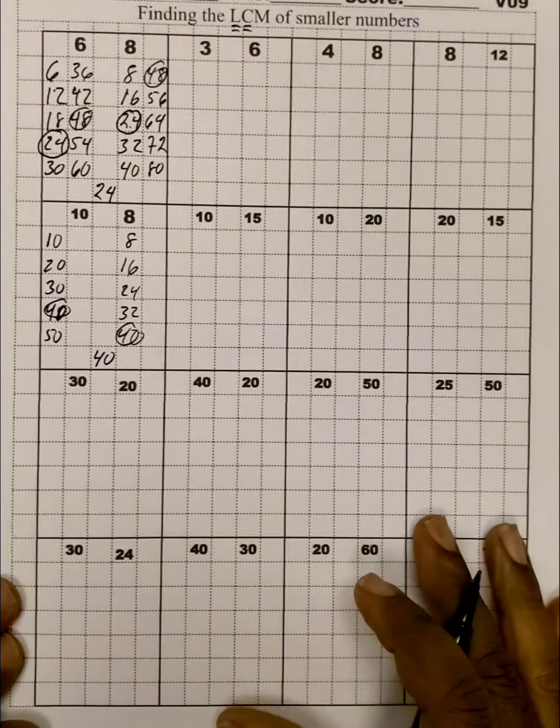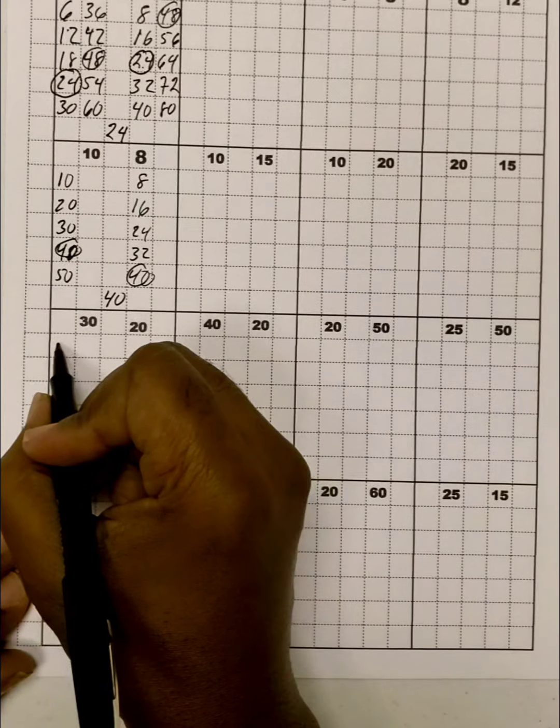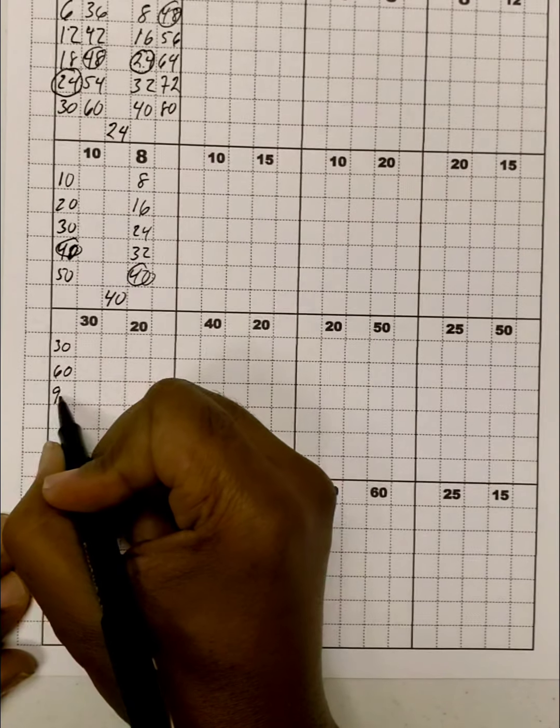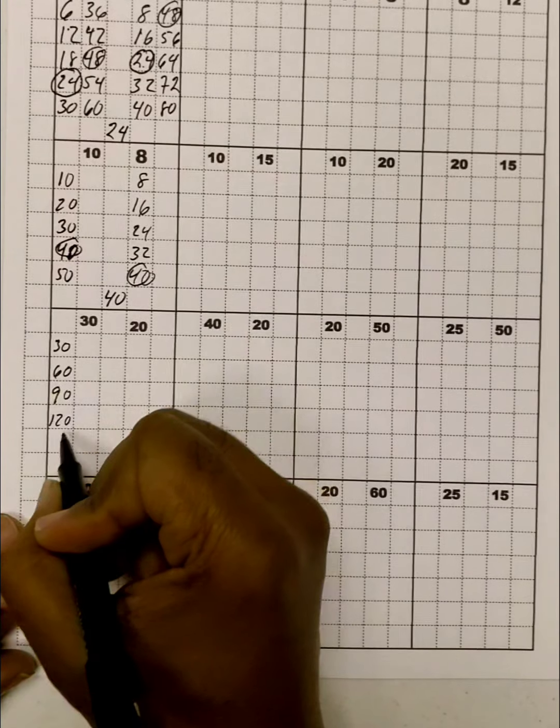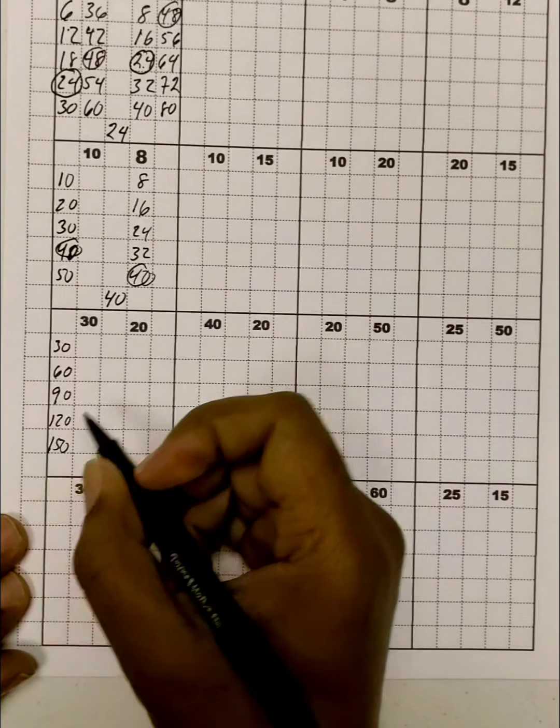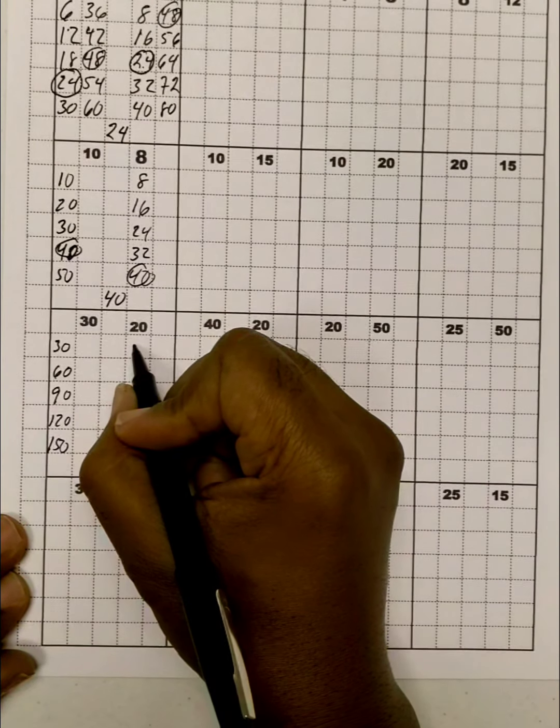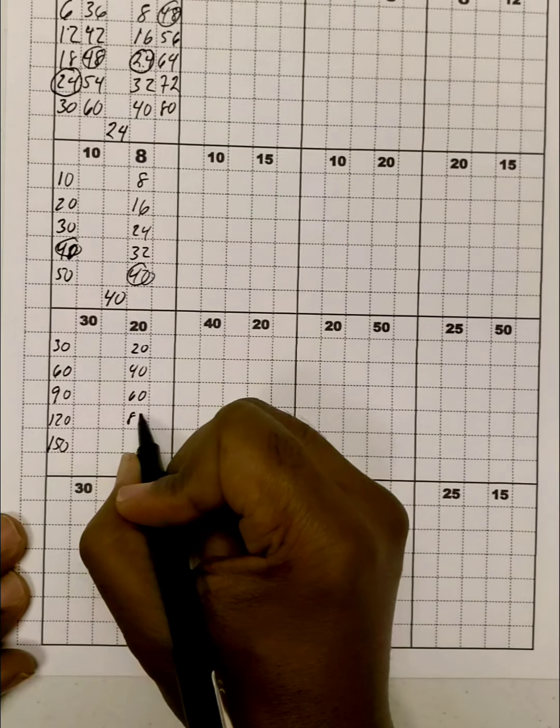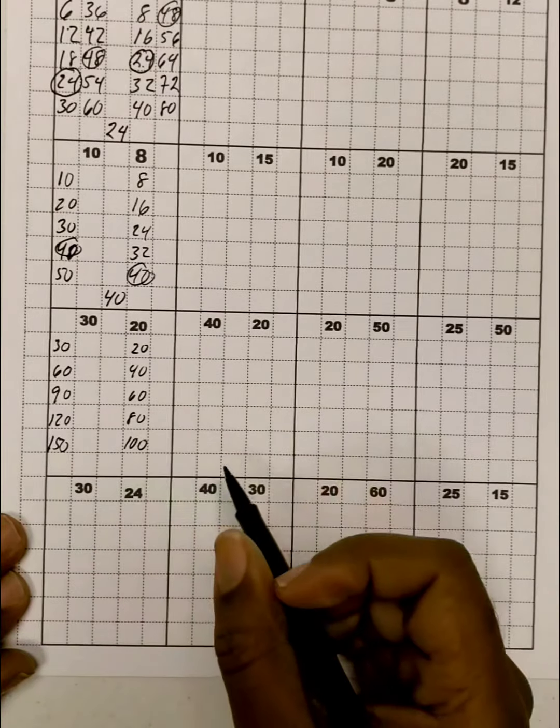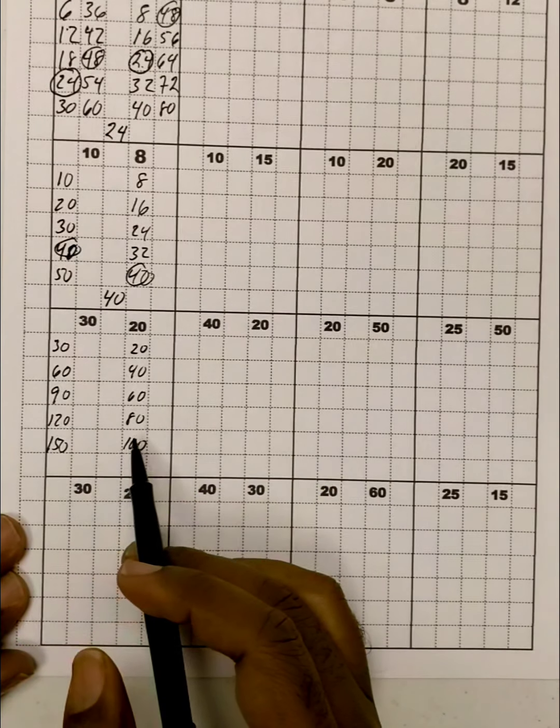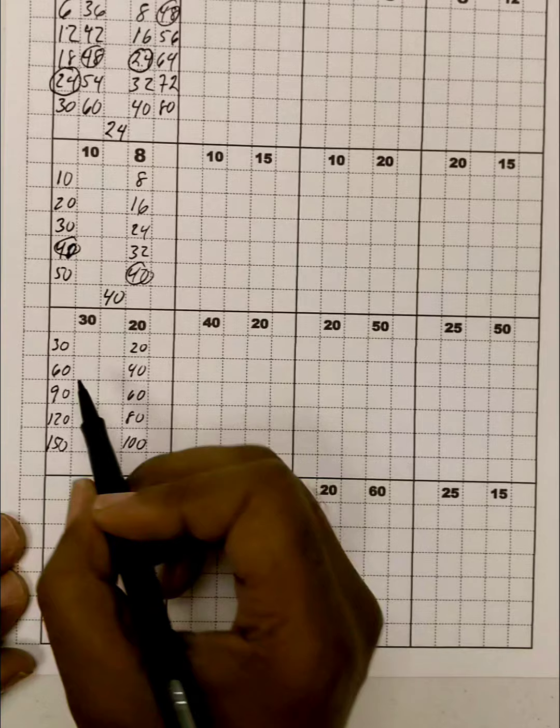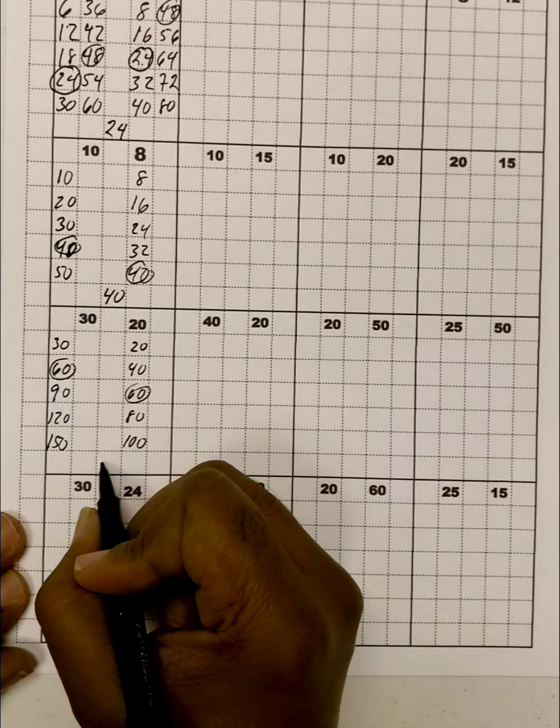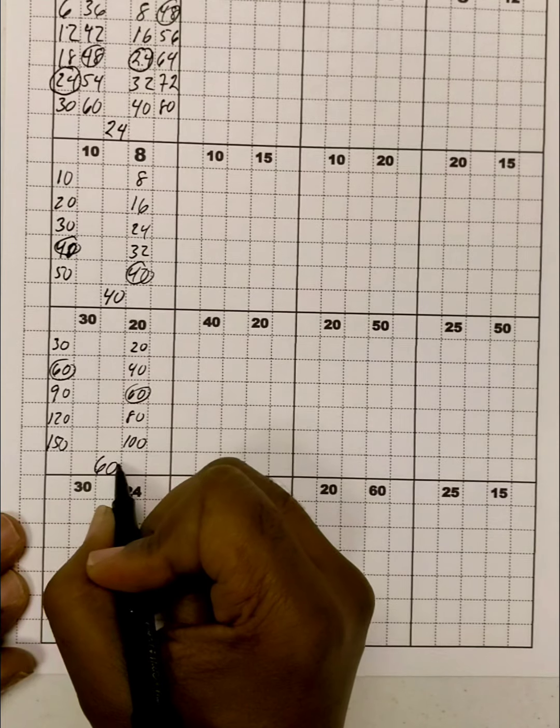Okay, let's go down here. So, the 30 timetables would be 30, 60, 90, 120, and 150. The 20 timetables would be 20, 40, 60, 80, and 100. Let's see if we have anything in common yet. And, yeah, I do. They have the 60 in common, and that's the lowest. So, the least common multiple is 60.